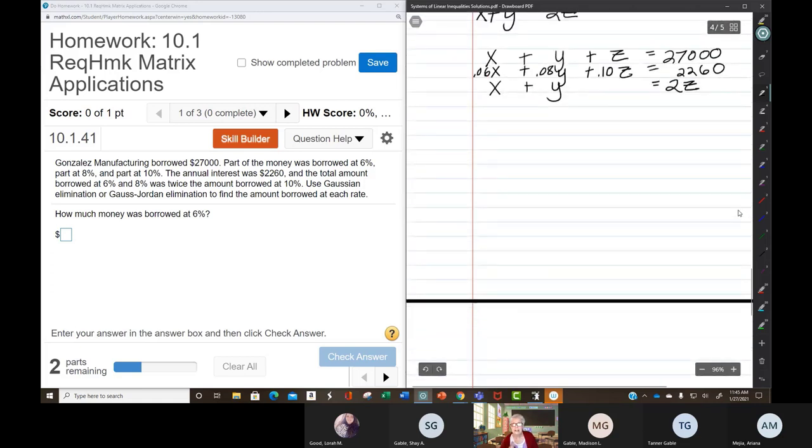So, to get this into system form so we can turn it into a matrix, I'm going to have to do this slightly radical thing. Watch me. I'm going to have to subtract 2Z from both sides of that last equation. So that my system will now be, this third line is going to become, X plus Y minus 2Z equals 0.